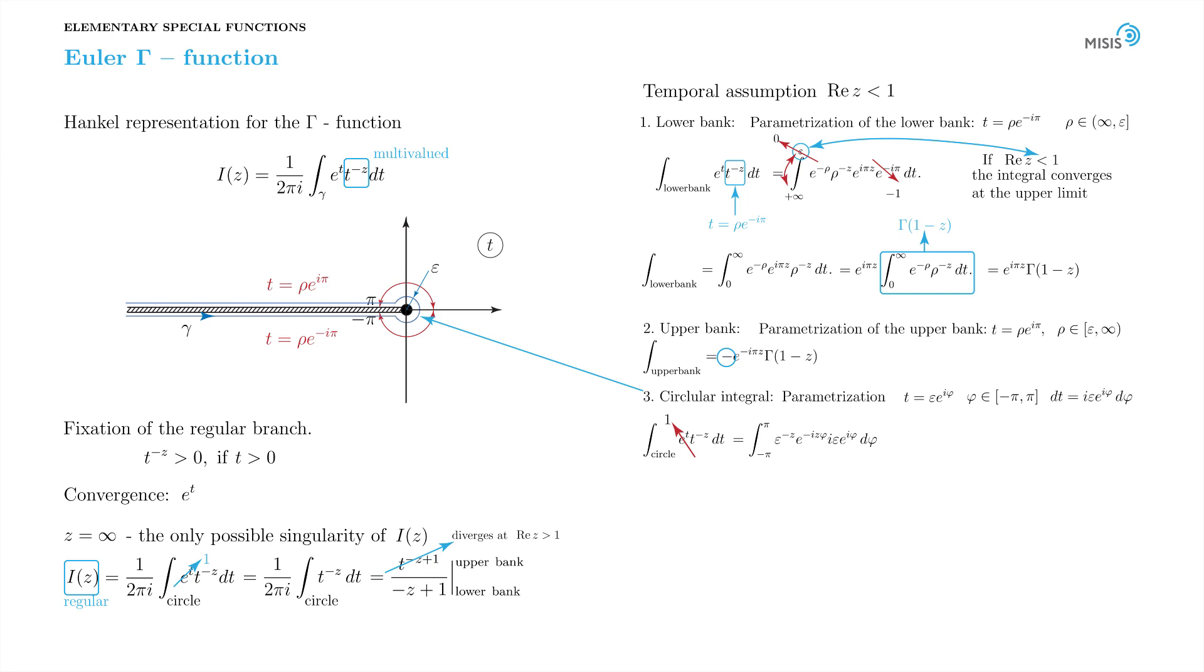The crucial thing is that we can factor out epsilon to 1 minus z. And this is precisely the factor which defines the order of magnitude of the integral. The remaining integral is a simple exponential, but the important thing is that it's some finite number. So the integral along the circle is proportional to epsilon to 1 minus z.